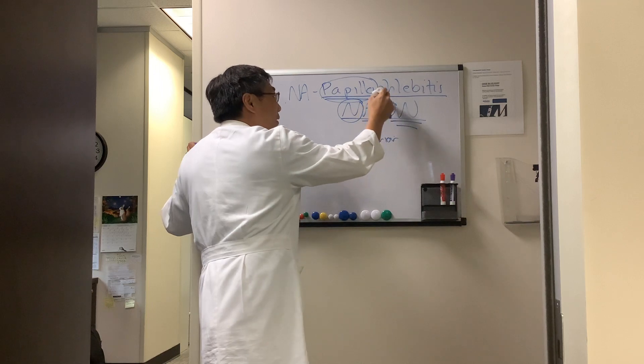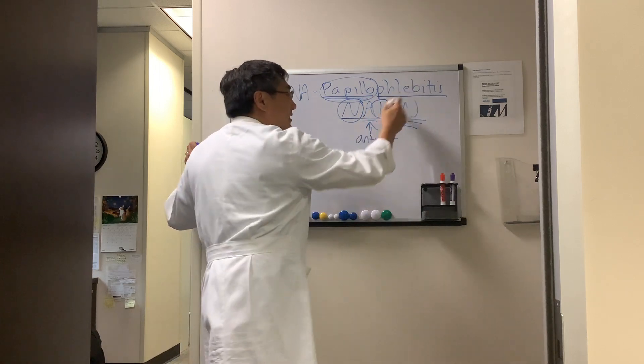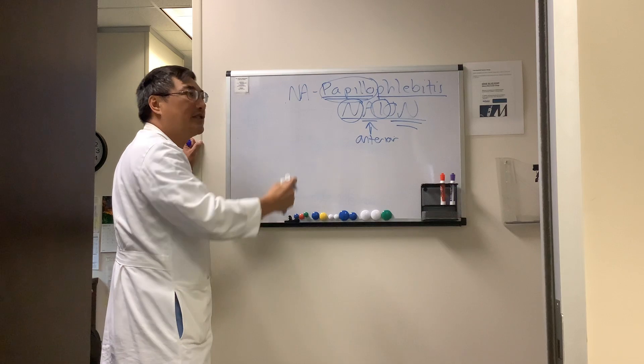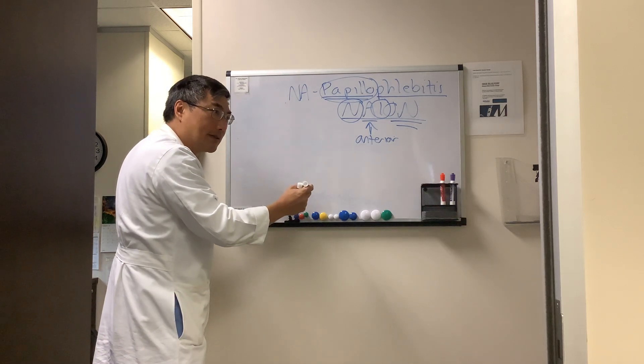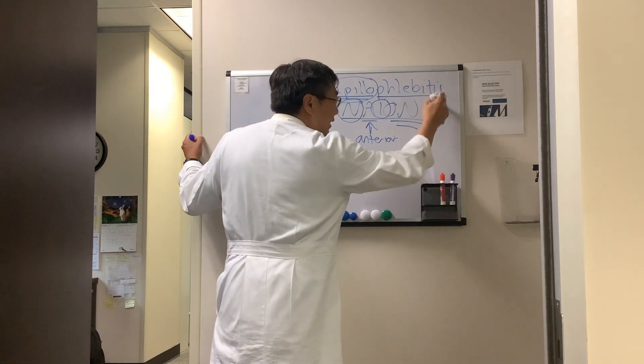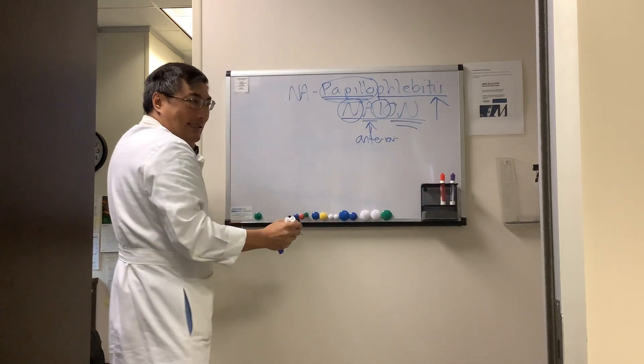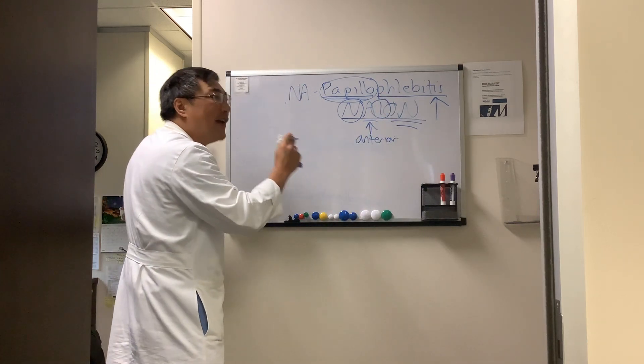In fact, they're both probably ischemic, and so it's easy to see how you would confuse these two conditions because they overlap in their clinical presentation. The differentiating feature is the phlebitis, the inflammation is in the vein.